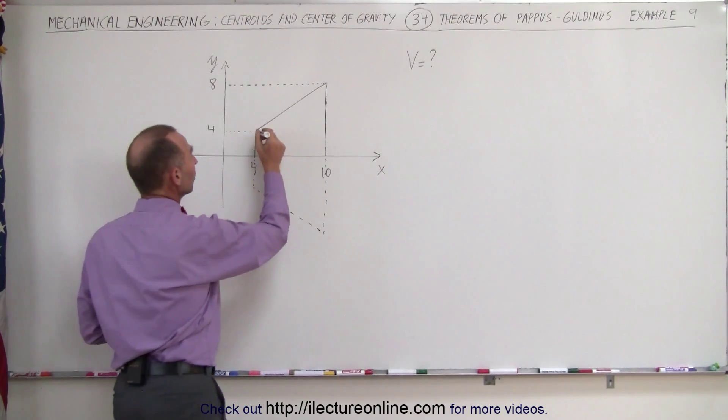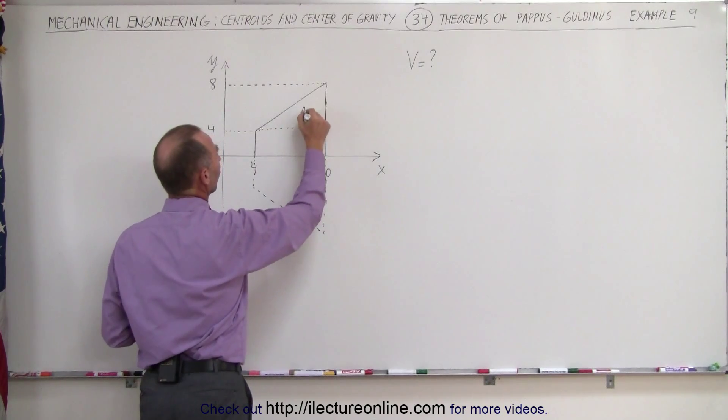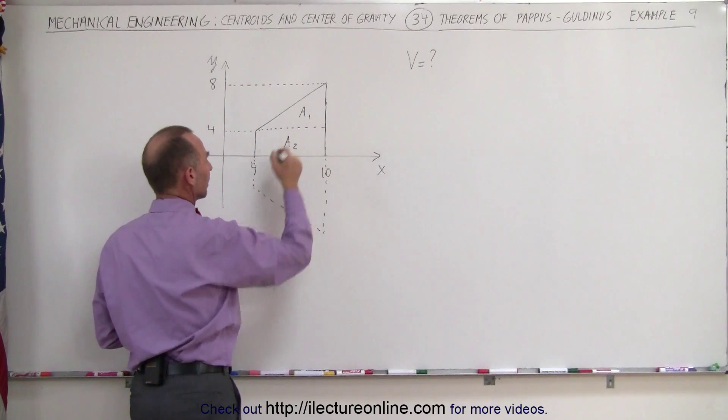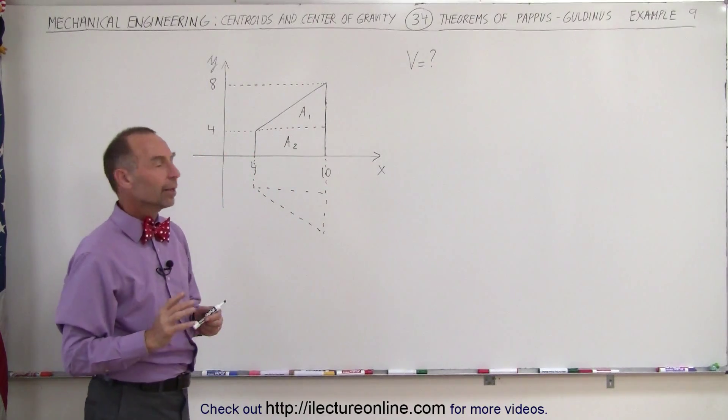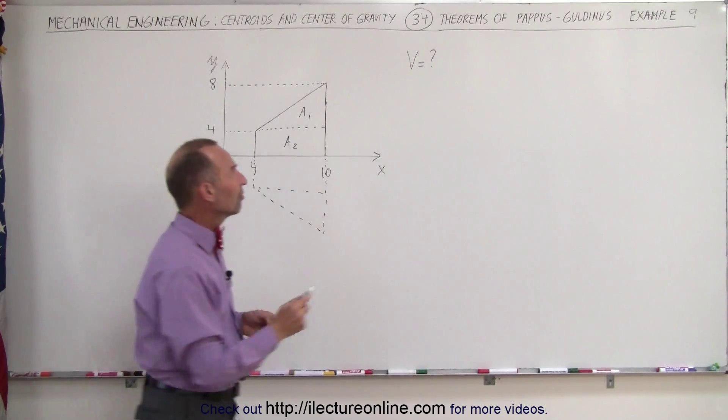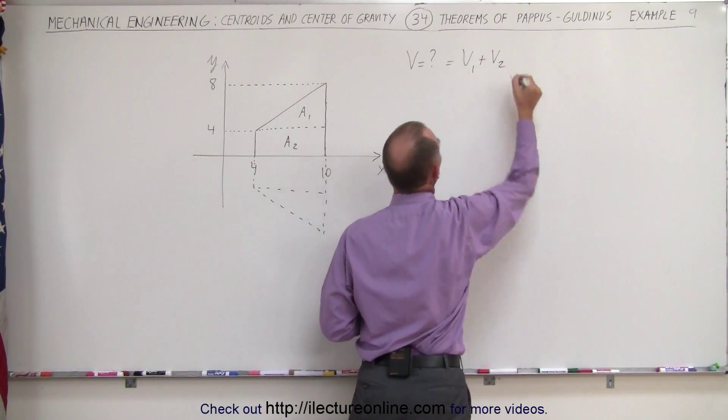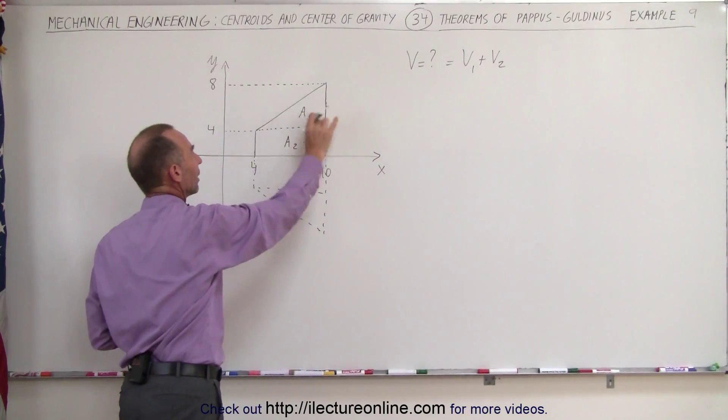What I recommend we do is we're going to break this up into two pieces, call this area 1 and call this area 2. When we revolve each separate area, we're going to end up with two separate volumes. To find the total volume, we simply have to add the two volumes together, V1 plus V2. So let's work these separately, starting with V1 caused by area 1.